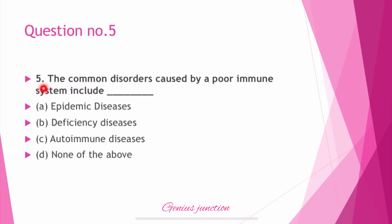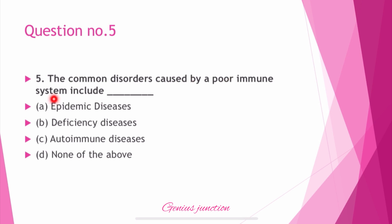Question number 5: The common disorders caused by poor immune system include? Options are: epidemic diseases, deficiency diseases, autoimmune diseases, and none of these. The right answer is A — epidemic diseases. Common disorders caused by a poor immune system are epidemic diseases.